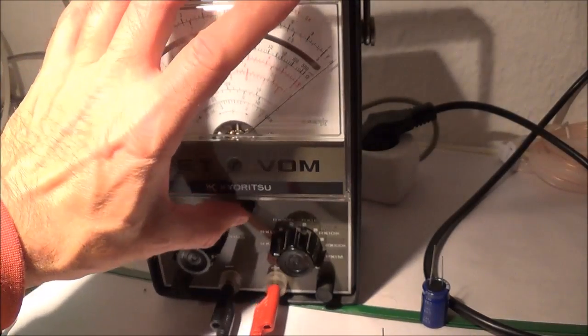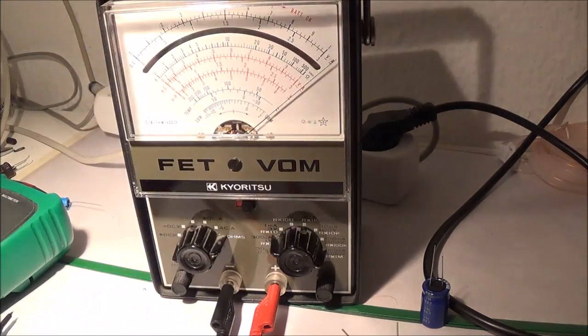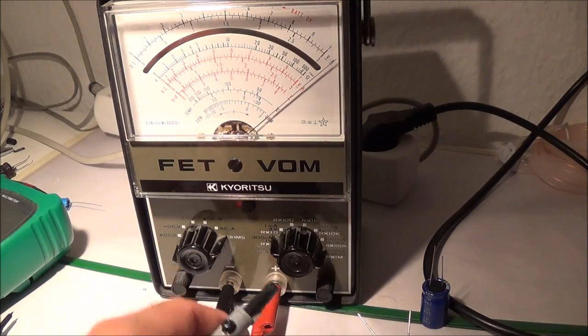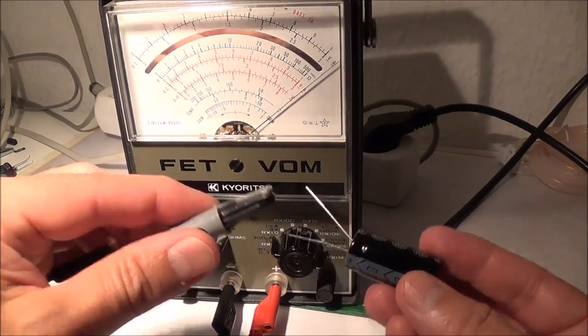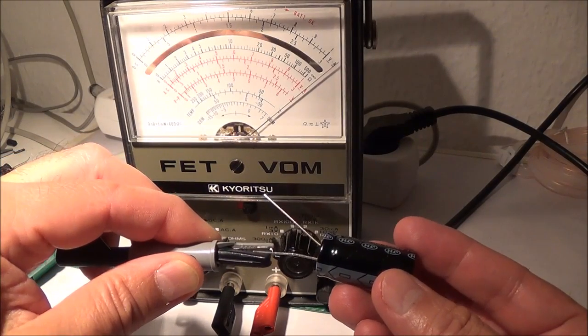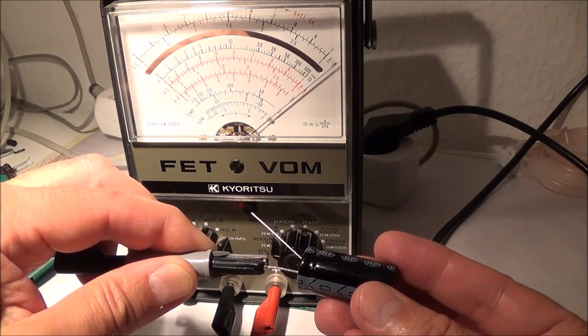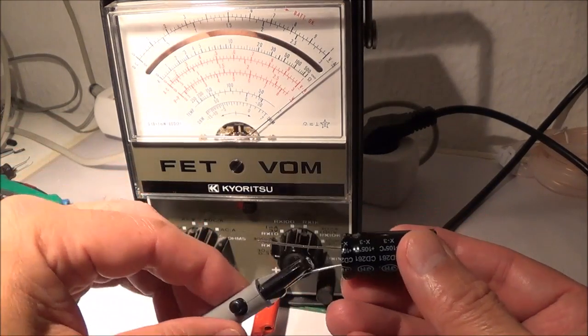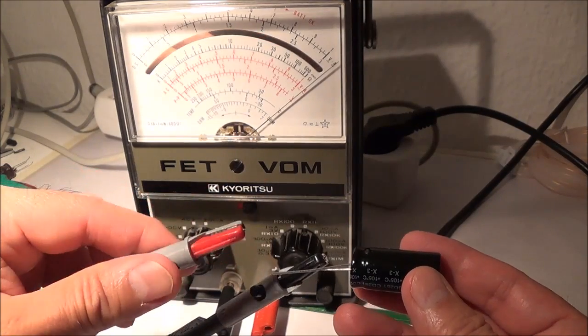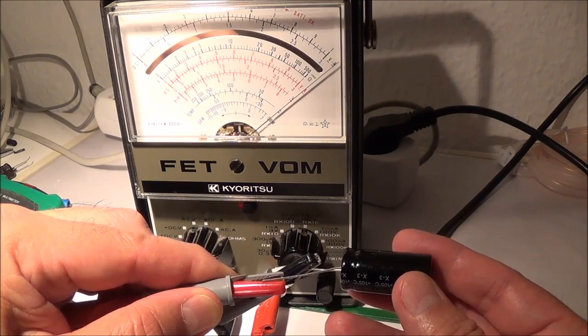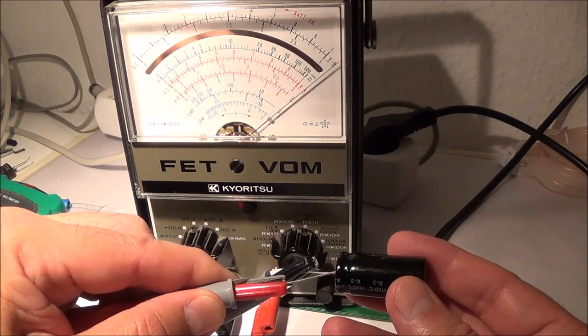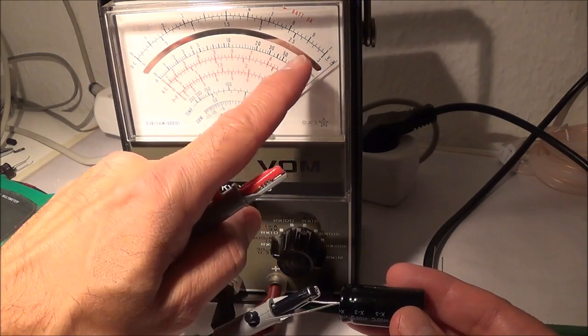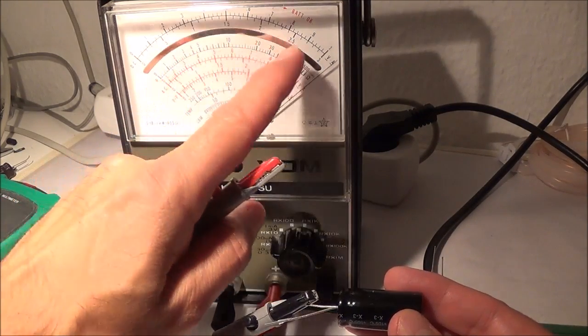So here we go, I got my FET volt ohm meter turned on and I got in the ohms position. I always start out with the highest range, in this case it's R times one million ohms. Then I connect the minus lead of the meter to the minus lead on the capacitor - you can see there's a big minus on there - and the positive lead of the ohm meter goes to the positive lead of the capacitor. Now what should happen is the needle here should swing down and then swing back up.